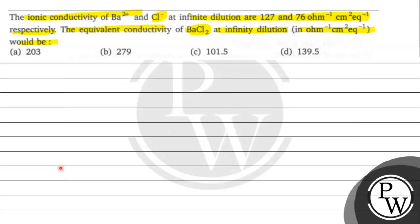Now, what do we call BaCl2 equivalent conductivity at infinite dilution? Options are given to us. Option A is 203, option B is 279, option C is 101.5, option D is 139.5.